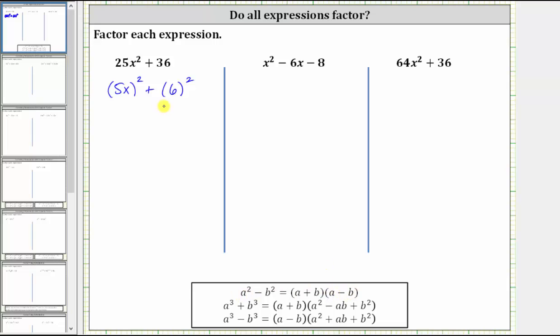A sum of squares does not factor. We could try factoring it, but if we multiplied out the binomials, we would not get 25x squared plus 36. So because this expression does not factor, we can say the expression is prime.